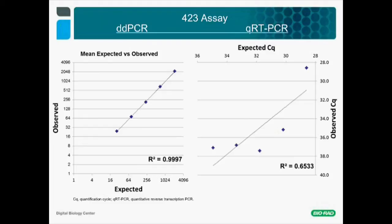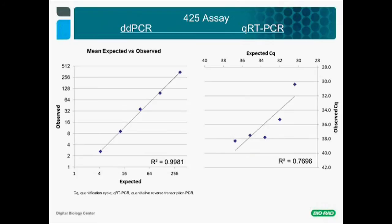A similar comparison was done for the miRNA 425 assay. The ddPCR results line up nicely according to their expected values, providing an excellent regression value—the R-squared here is 0.9981. By contrast, qRT-PCR has less-optimal alignment as well as a much lower level of linearity—in this case, 0.7696.